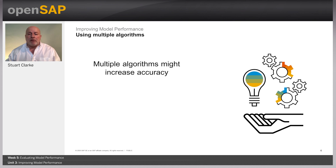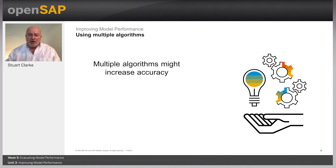Sometimes an approach called segmented modeling can be used, where classification or regression models are developed for each segment of a cluster model. Instead of training one model, multiple models are trained: first a cluster model is developed to create clusters of the data with common characteristics — for example using k-means. Then separate classification or regression models are developed for each cluster, with the goal that the combined accuracy of these separate models exceeds the accuracy of a single overall model.